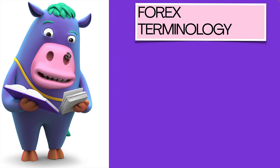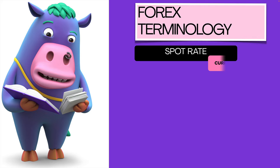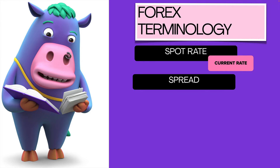Let's have a look at some foreign exchange terminology. You might hear the word spot rates — that just means the current rate available immediately. You'll also see spreads, and that's how banks make their money by buying and selling foreign exchange. When you get offered foreign exchange, they often give you a range, a spread, and it's within that spread that the banks make money.